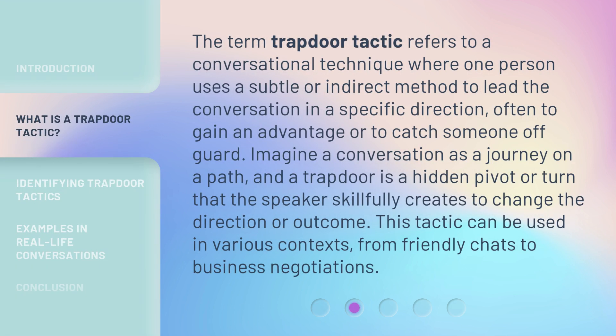The term trapdoor tactic refers to a conversational technique where one person uses a subtle or indirect method to lead the conversation in a specific direction, often to gain an advantage or to catch someone off guard. Imagine a conversation as a journey on a path, and a trapdoor is a hidden pivot or turn that the speaker skillfully creates to change the direction or outcome. This tactic can be used in various contexts, from friendly chats to business negotiations.